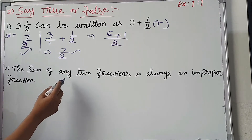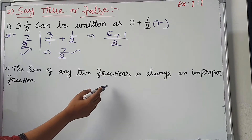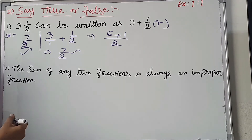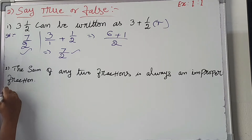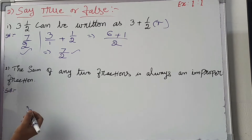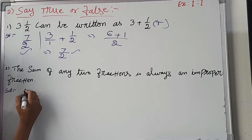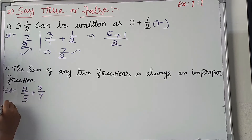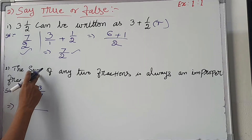The sum of any two fractions is always an improper fraction. Here we have a statement — true or false with proof. Here we have two fractions: 2 by 5 is a fraction, and 3 by 7 is a fraction.